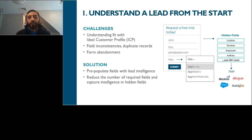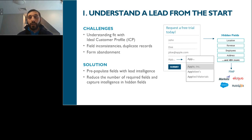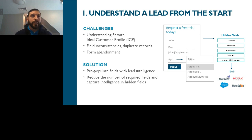Many of you might already be using fit criteria such as industry and size in your lead scoring and marketing automation. But incorporating intent, technographic, and risk criteria can also help you prioritize leads for sales or SDR follow-up. This is where AI and automation can come into play — supplementing what you're already doing by finding pockets of high-value audiences that match this criteria from additional signals that data aggregators are collecting. So this can be an additive solution to what you're doing.